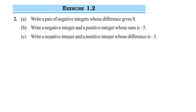Hey everyone, here we're doing the second question from Exercise 1.2 — the chapter on integers of Class 7. This question is similar to the first one, but here they have given a specification, so let's do it. The first question: write a pair of negative integers whose difference is minus 8.